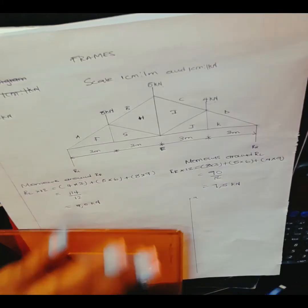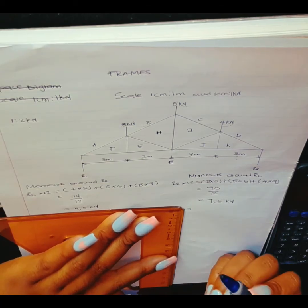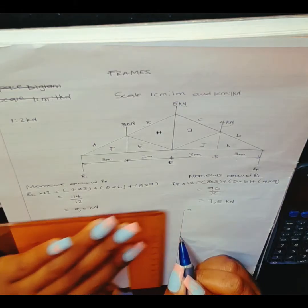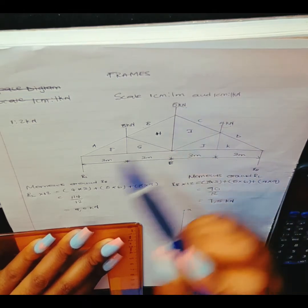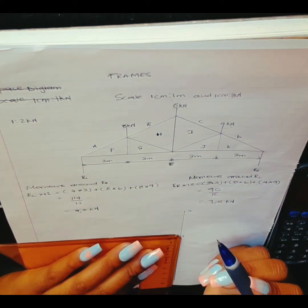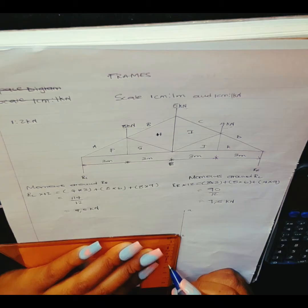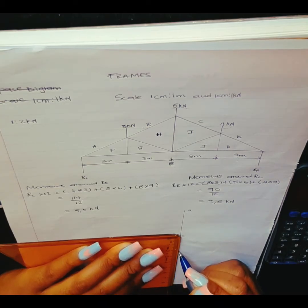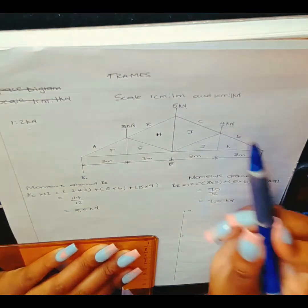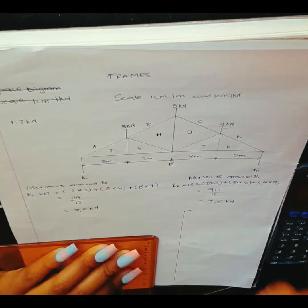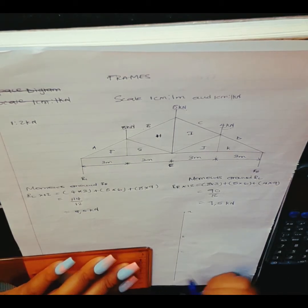Here is my 4 centimeters — that's point B. From B to C I have a force of 5 kilonewton. Divide 5 by 2 gives 2.5 centimeters. I measure 2.5 from point B going down — that gives me point C. From C to D I have a force of 4 kilonewton. Divide 4 by 2 gives 2 centimeters. From point C I measure 2 going down — that is point D.